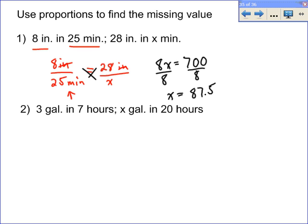The second one says you can go through 3 gallons in 7 hours. So we just do 3 gallons over 7 hours. We want to find out, well, that's equivalent to how many gallons - that's what we're trying to find out - in 20 hours.